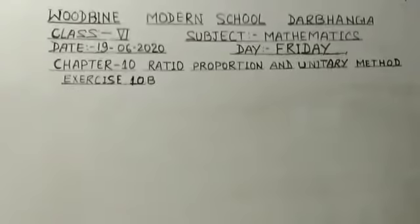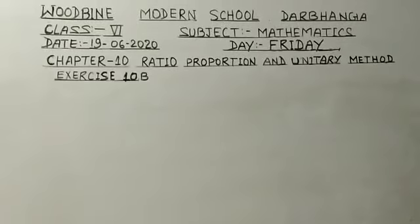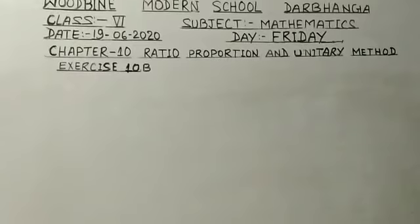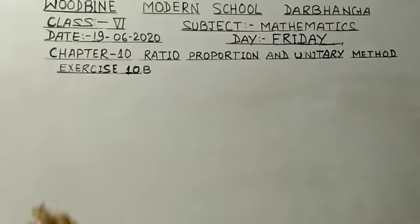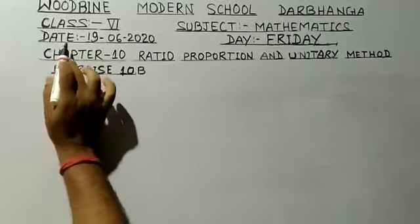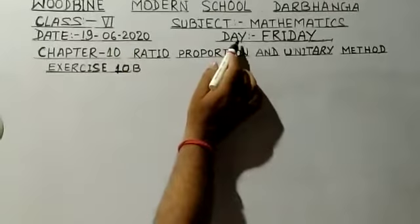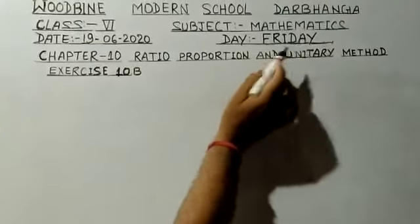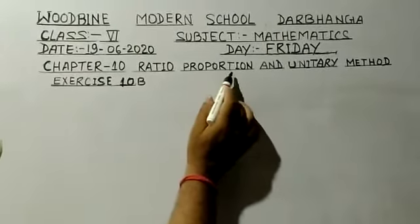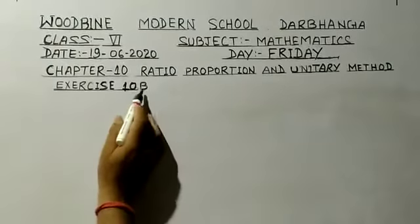Today is the third day of the week. Today we are going to teach you Exercise 10B. Class 6, subject Mathematics, date 19 June 2020 — today is Friday. Chapter 10: Ratio, Proportion and Unitary Method. Exercise 10B.